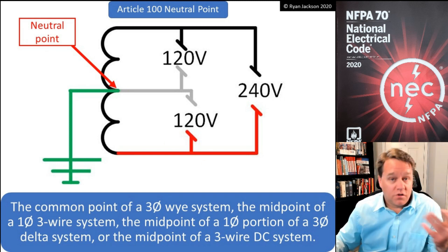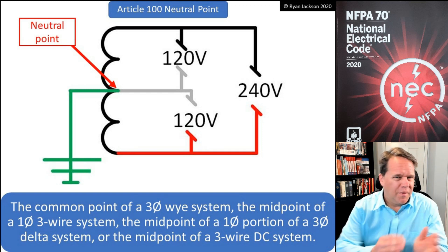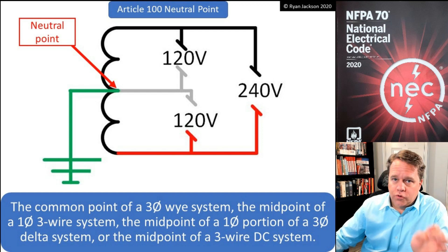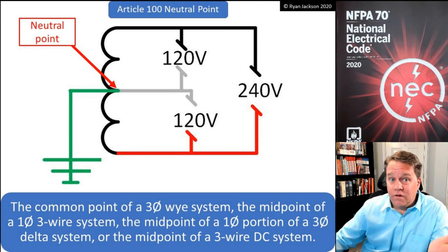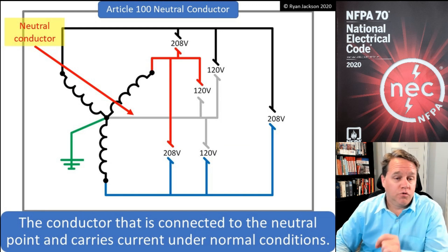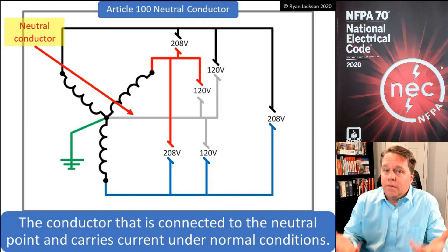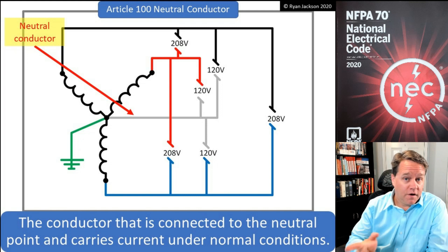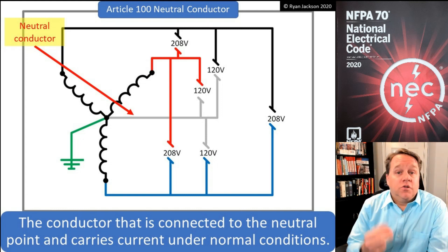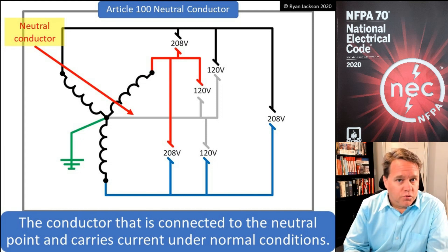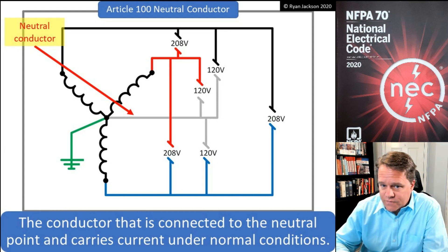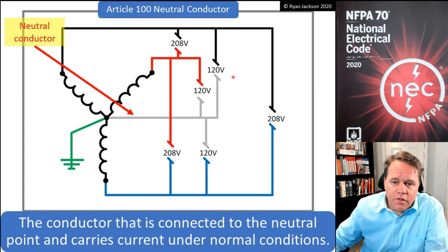We can also have the same thing on a three-wire DC system, although I'm not really getting into the DC part of it. Those are our neutral points. We defined neutral point in order to define neutral conductor — that was really the objective of these definitions. The neutral conductor is the conductor that's connected to the neutral point and carries current under normal conditions.